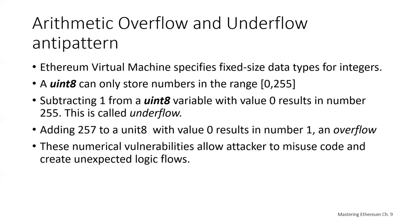In the case of signed integer types, which can represent negative numbers, the underflow or overflow simply starts with the largest negative value. For example, signed integer 8, or int8, has a range of minus 128 to positive 127. So if you tried to store the number 128, it would actually roll over and become negative 128. These sorts of numerical gotchas allow attackers to misuse code and create a lot of unexpected logic flows.